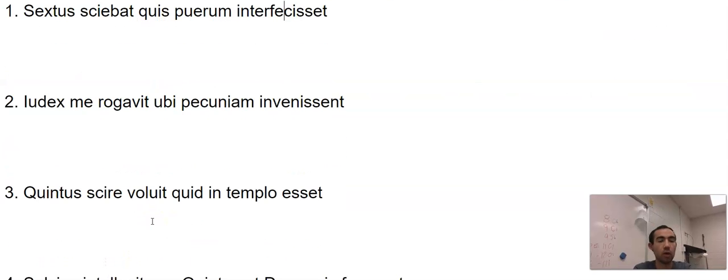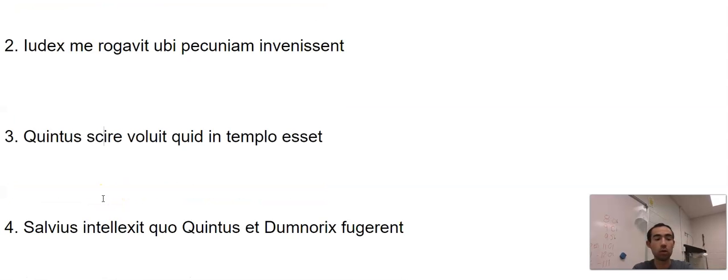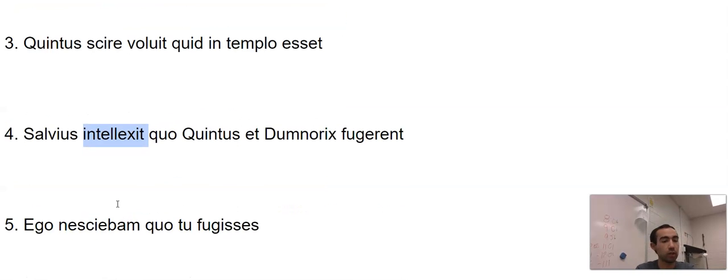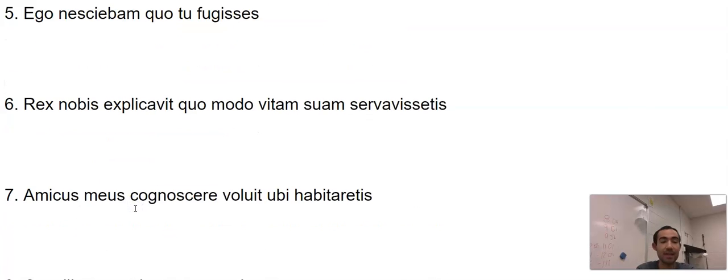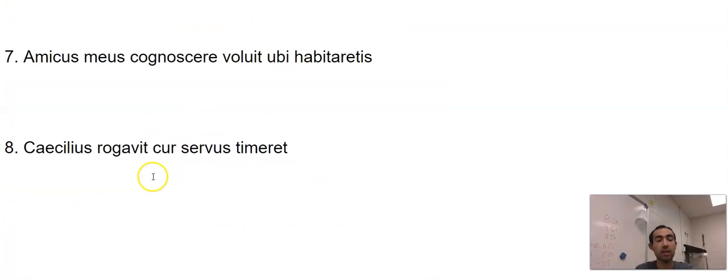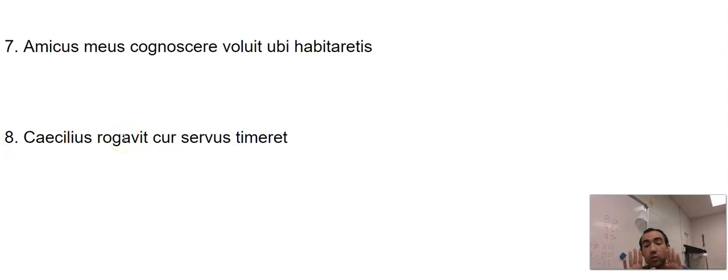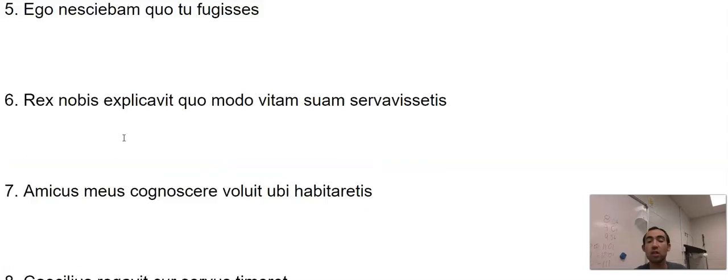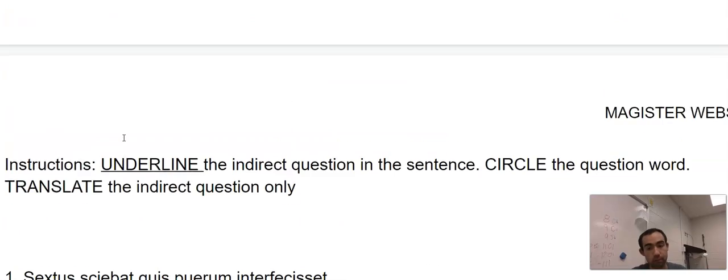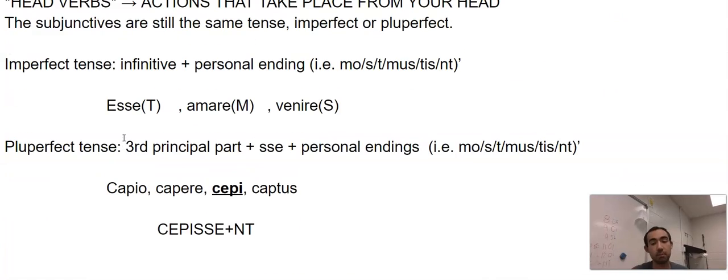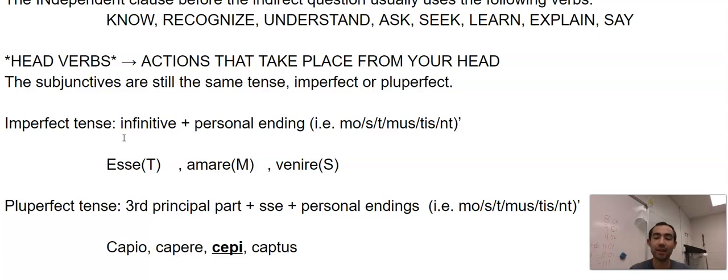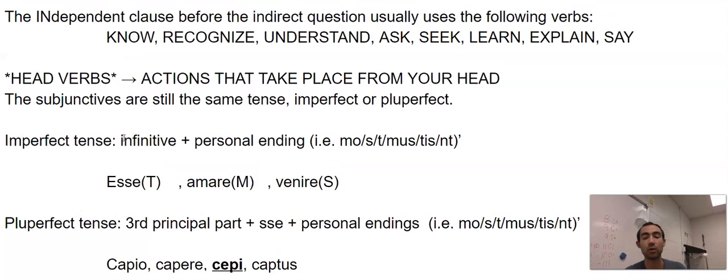For example: knew, asked, was wanting, wanted to know, understood, was not knowing, explaining, understanding, asking—all of those are head verbs and they have those question words. You need to know those question words for sure, but those are indirect questions, pretty simple. Alright, take care y'all. We'll come back to this on Friday and we're going to be kind of reviewing these a little bit too. Bye.